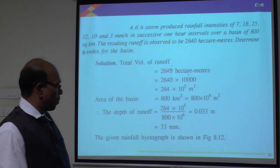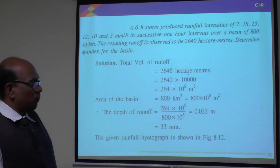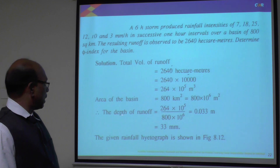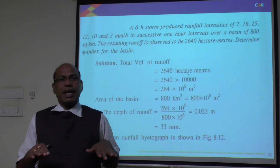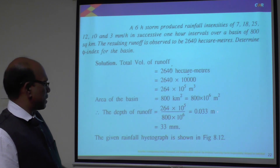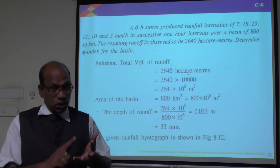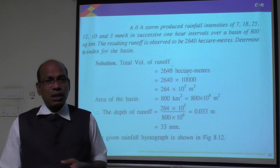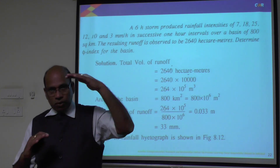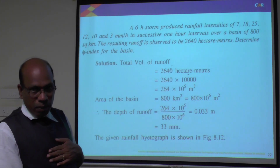Based on the given runoff of 2,640 hectare-meters, first convert it into cubic meters by multiplying by 10,000 to get the volume of runoff. The catchment area given in square kilometers is converted into square meters. Then the depth of runoff equals the volume of runoff divided by the area, giving a depth of runoff equal to 0.033 meters, which converts to 33 mm. This is the runoff depth.